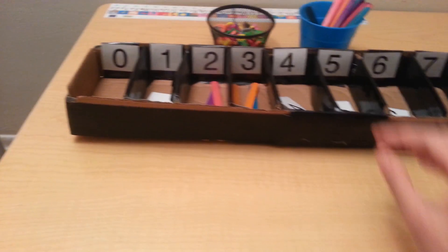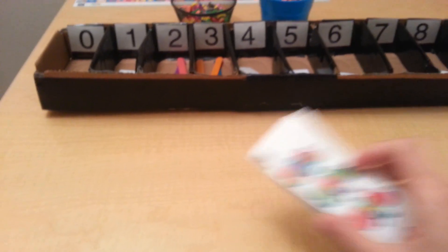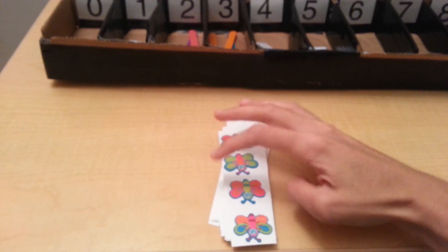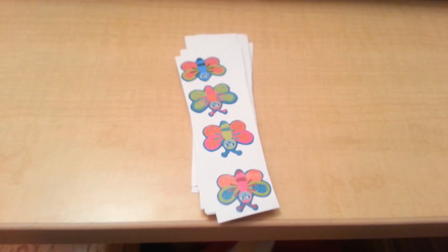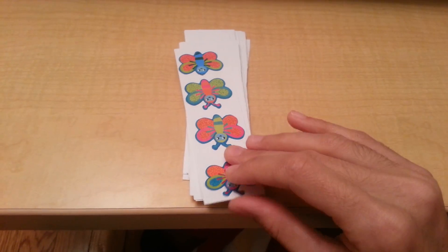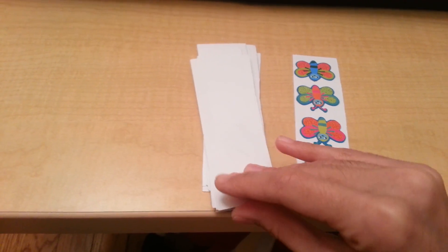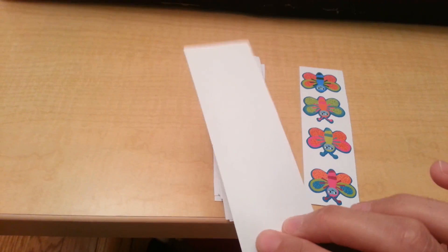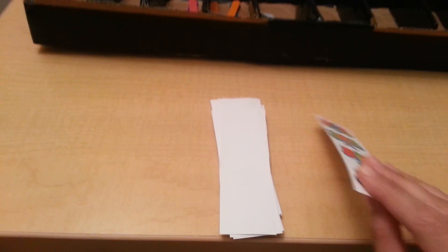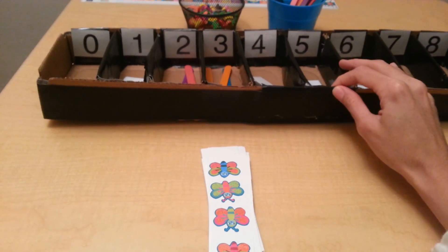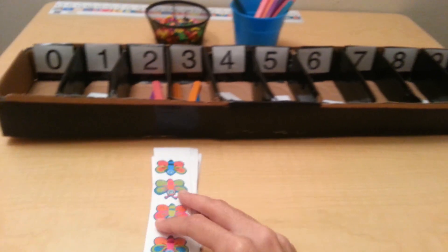One last activity that I have, I took some index cards and I cut them in half and I placed some stickers on it to represent the number quantity. As you can see, this is zero.